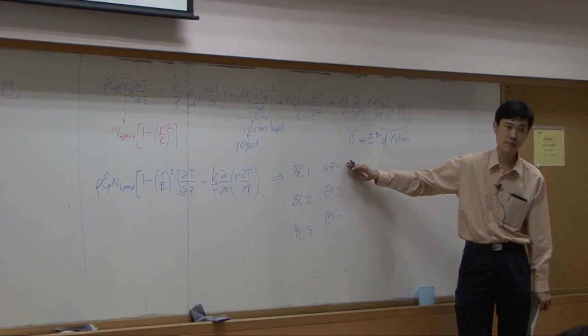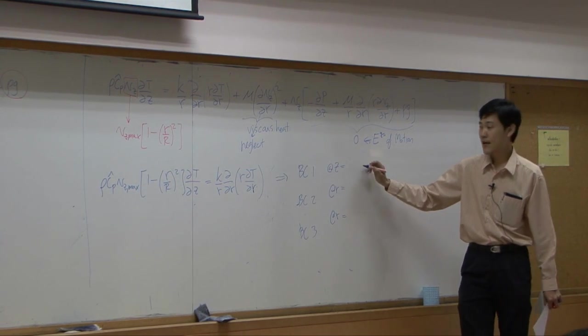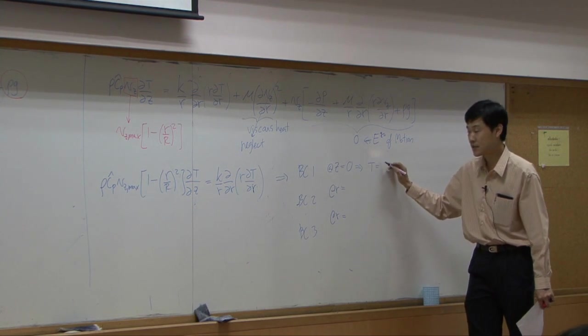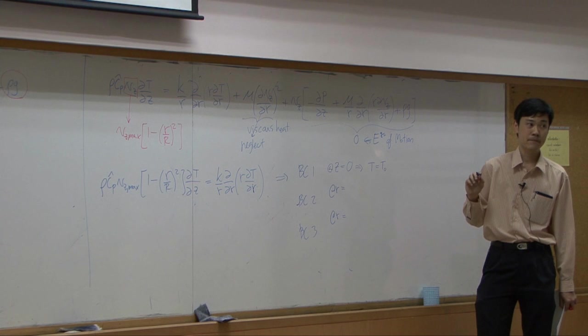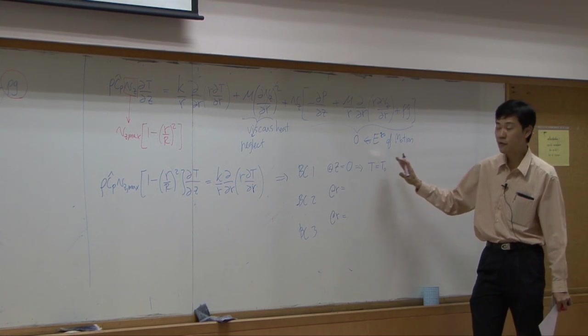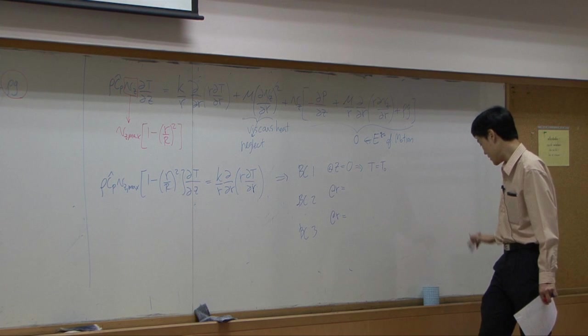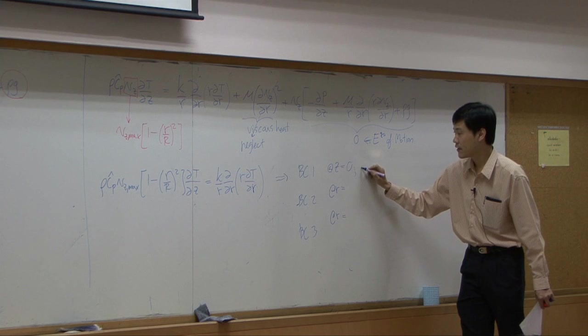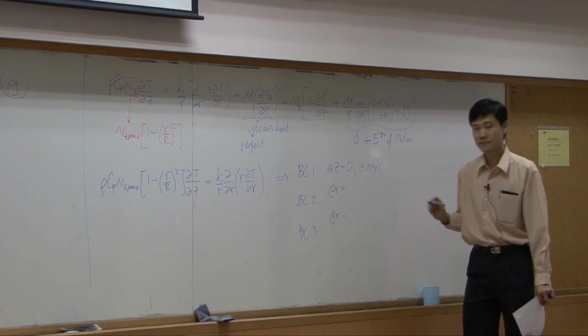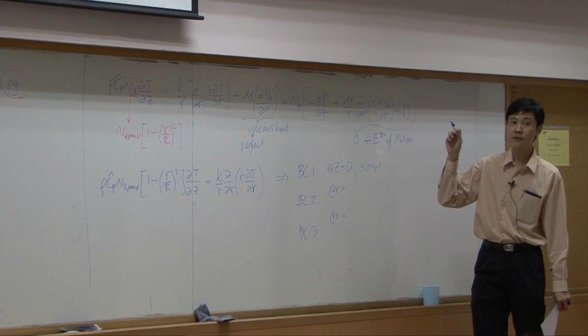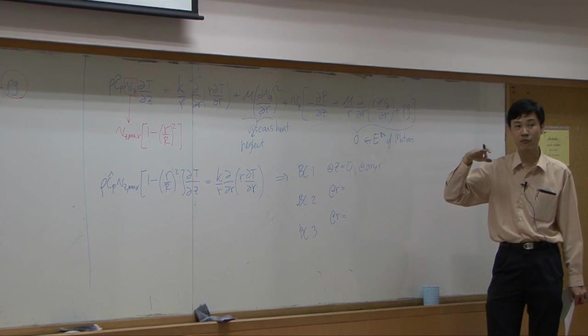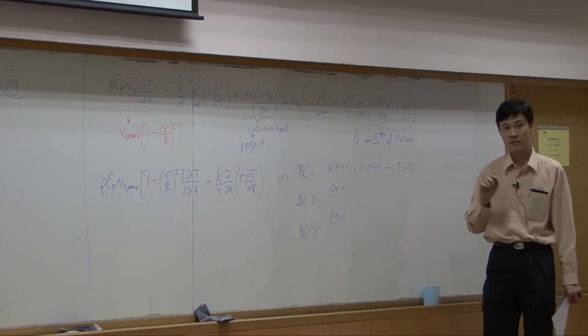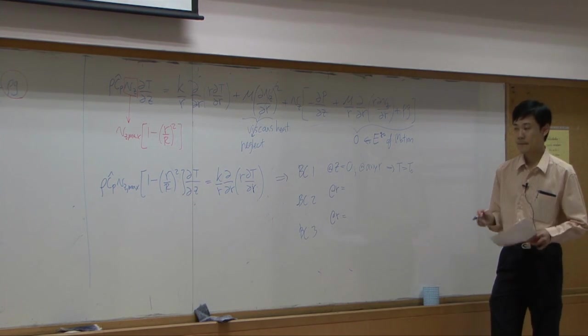What is the first one? At z equal to zero, t is equal to t zero. In order to express this one correctly, you need to indicate at z equal to zero at any r. Because every point on the same plane, on the top plane, at z equal to zero, you get t equal to t zero always.